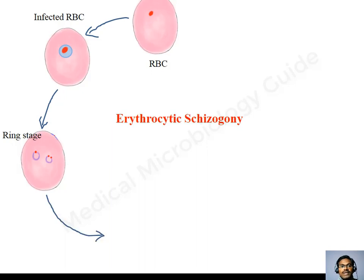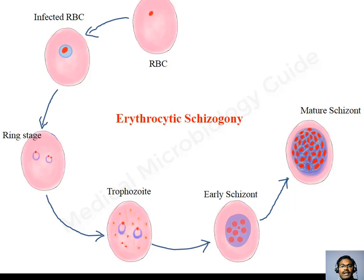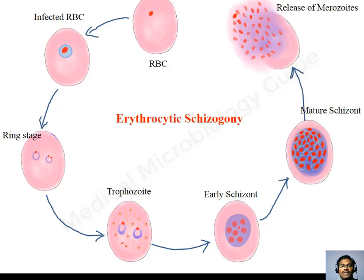The ring stage will get converted into the mature trophozoite. Inside these RBCs, we can find yellowish brown hemozoin pigment. These trophozoites will get converted into the early schizont, and the mature schizont will contain around 10 to 36 merozoites in the case of Plasmodium falciparum. Different species of Plasmodium have different numbers of merozoites per RBC, and counting the number of merozoites per RBC can give a clue in the identification of the parasite.